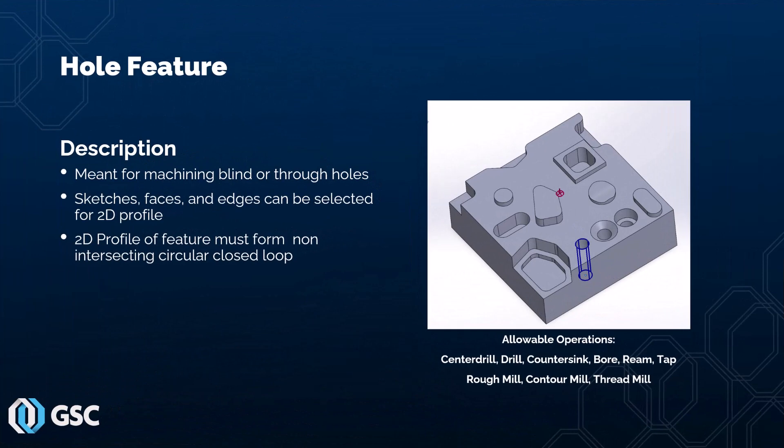Next we'll take a look at how to create a hole feature. A hole feature, as the name implies, represents some sort of blind or through hole. In order to define the 2D profile, it has to be a circular non-intersecting closed loop. You can select sketches, faces, or model edges for your 2D profile. The allowable operations include all your hole operations such as center drill, drill, countersink, bore, ream, and tap. You can also use rough mill, contour mill, and thread mill operations.